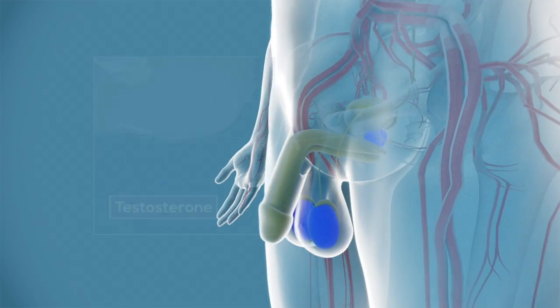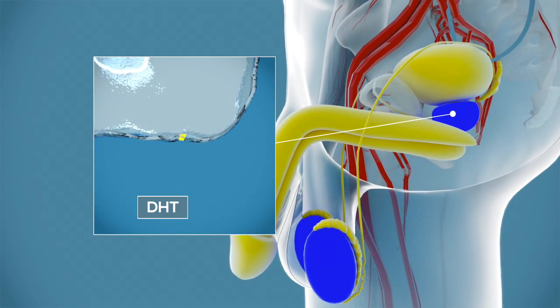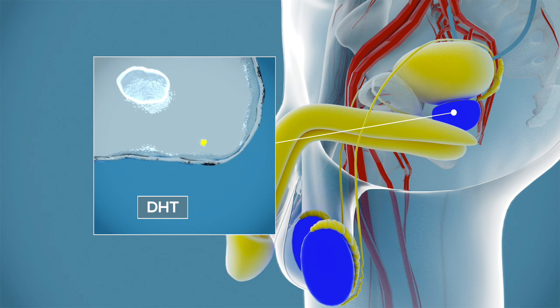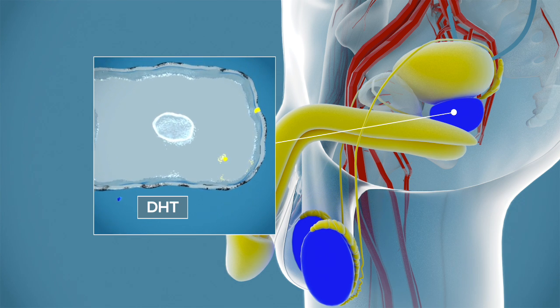In the prostate, testosterone is converted into another hormone called dihydrotestosterone, DHT, which can lead to prostate growth.